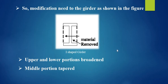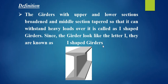Now, we can easily define what is girders. The girders with upper and lower sections broadened and middle section tapered so that it can withstand heavy loads over it is called I-shaped girders. Since the girders look like letter I, they are known as I-shaped girders.